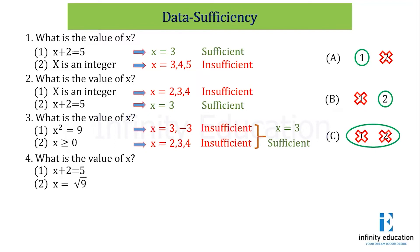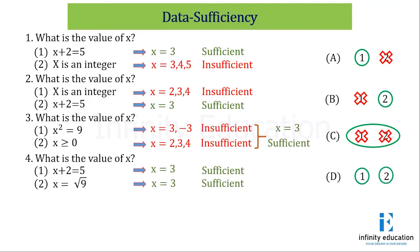Next question: what is the value of x? Statement 1: x + 2 = 5, so x = 3 — sufficient. Statement 2: x = √9, meaning the value for x has to be only 3. Some people might think the value is ±3, but that is not true — since the power of x is 1, there is only one positive value that satisfies the equation. So D is the answer because statements 1 and 2 are individually sufficient.